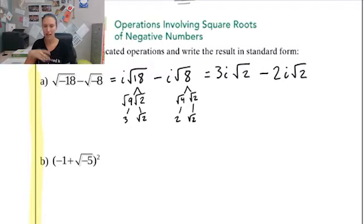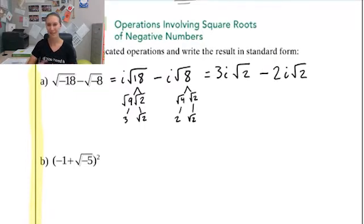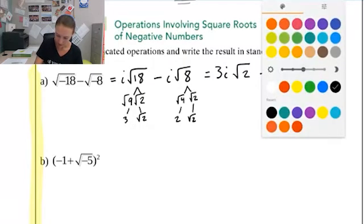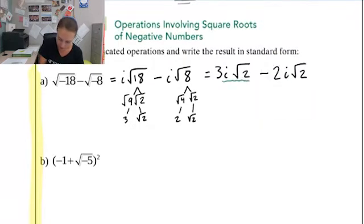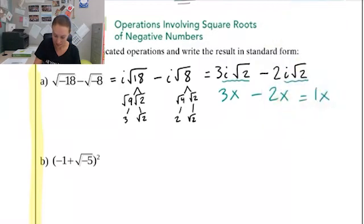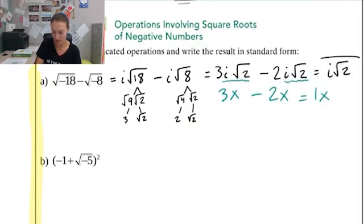So I can rewrite this as three i root two minus two i root two. I wrote three i rather than i three just because it sounds better — that's the only reason. Now notice this piece and this piece are exactly the same — it's like three x minus two x equals one x. Three i root twos minus two i root twos equals one i root two. And we've simplified that problem.